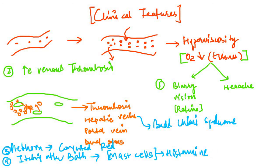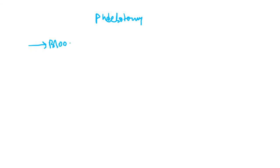So the major clinical features of polycythemia vera are: blurry vision, headache, thrombosis, plethora, and itching after bathing. The treatment of polycythemia vera is phlebotomy — a procedure in which a blood vessel is punctured and some blood is drawn out. This decreases the number of RBCs in the blood vessels, and since all clinical features are due to the increased RBCs, the clinical features will subside. If you like this video, do consider subscribing to our YouTube channel.